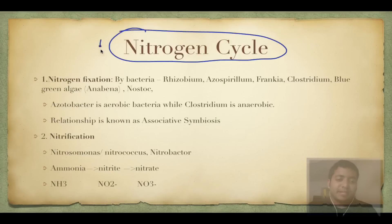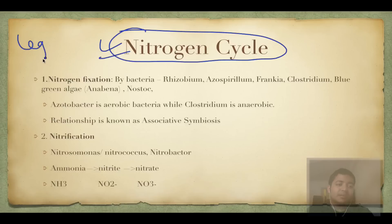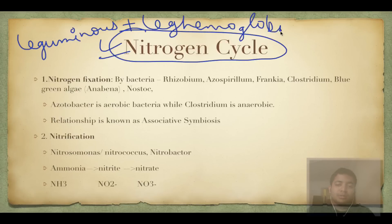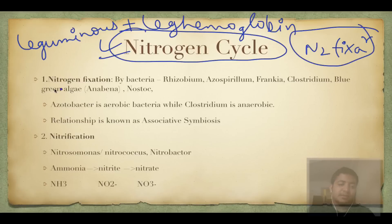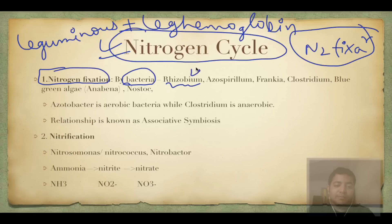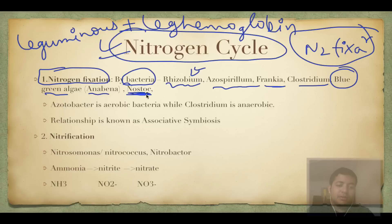Next is the nitrogen cycle, which is a bit complicated. The first step is nitrogen fixation. It can occur by bacteria like Rhizobium, Azospirillum, Frankia, and Clostridium. It can also be done by blue-green algae like Anabaena and Nostoc. Also remember Azolla fern - a pteridophyte - which has been used in rice cultivation to increase productivity because it harbors Anabaena.